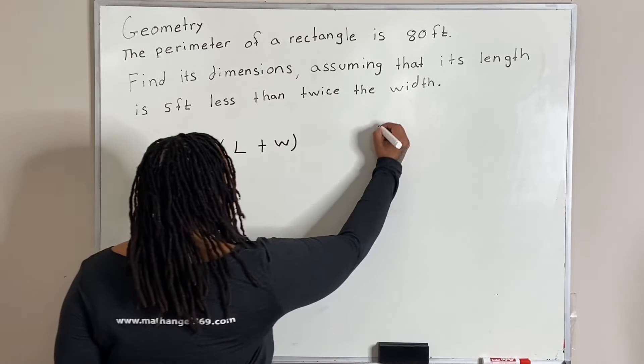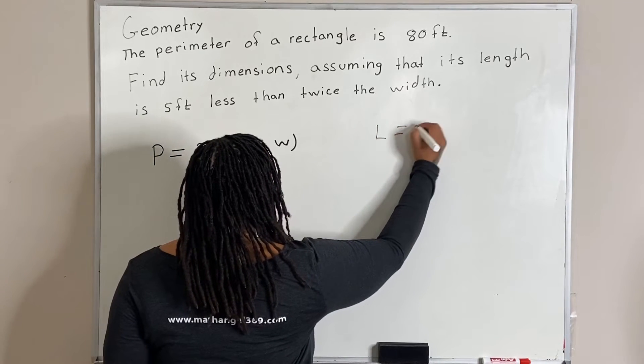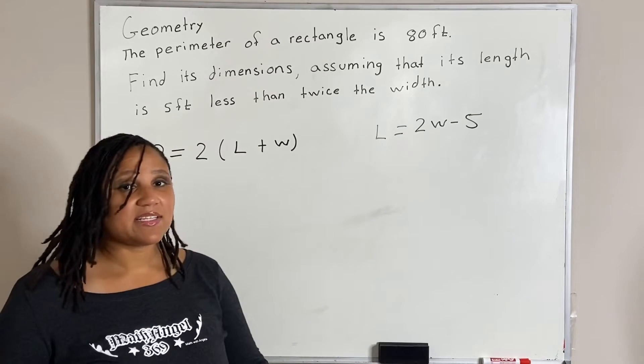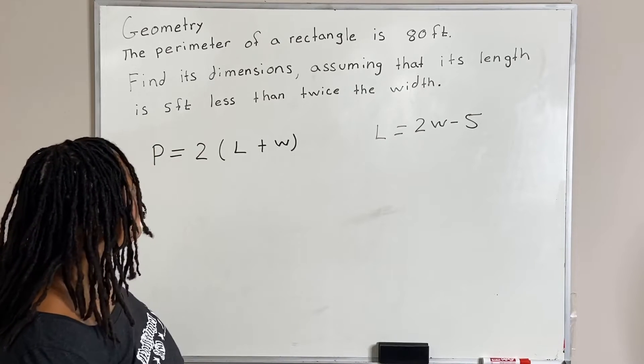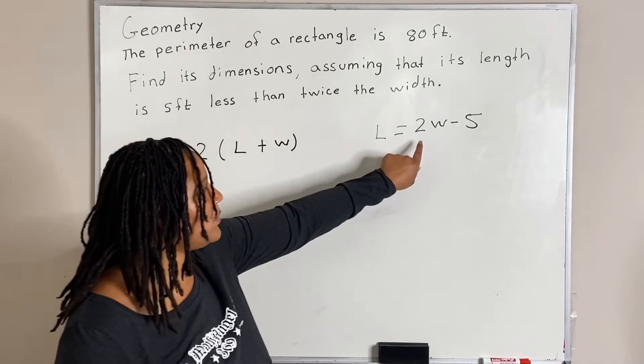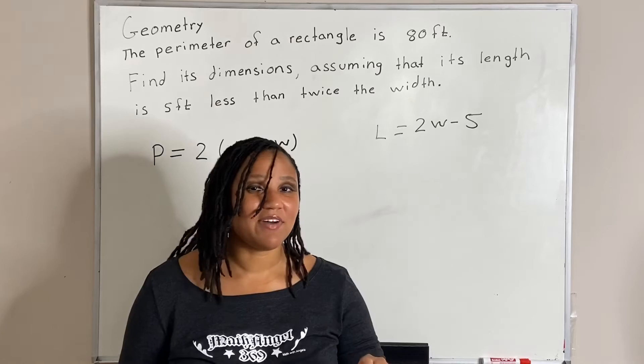So we are going to say that length is equal to 2w minus 5. Does that make sense? Because if the length is 5 less than twice the width, then we want to say 2w minus 5.